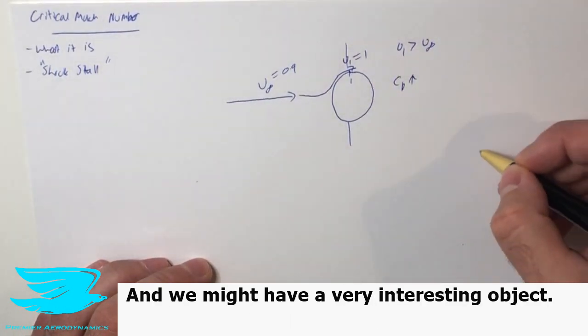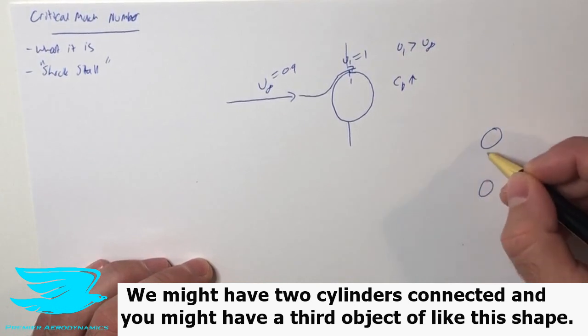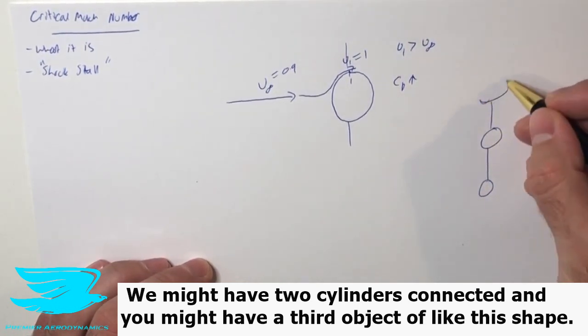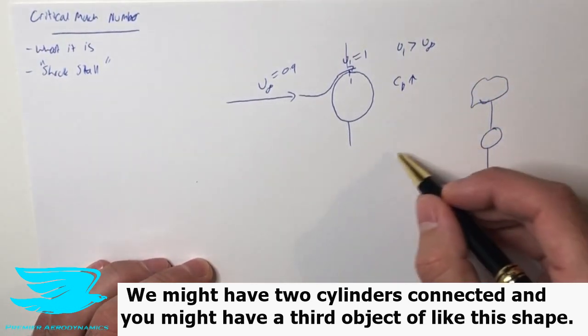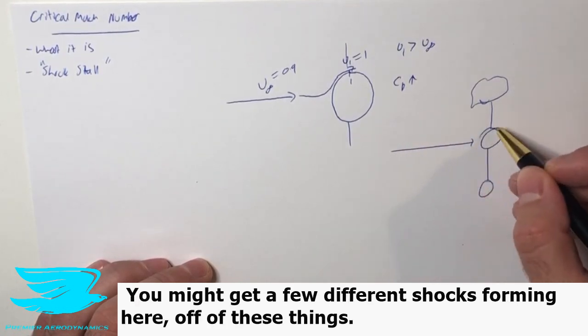And if you have a very interesting object, for example, you might have two cylinders connected, and then you might have a third object of like this shape, you might get a few different shocks forming here off of these things.